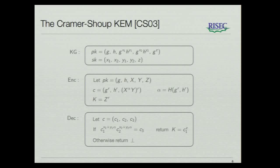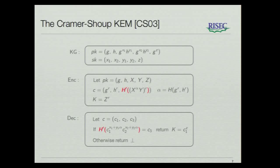Consider the Cramer-Shoup KEM, which has an encapsulation consisting of three group elements. In this KEM, the decapsulated key is only going to depend on the first group element, and the remaining group elements in the encapsulation are just used for checking validity. If we want to compress the ciphertext overhead of this scheme, we might look for a way to do a more efficient validity check. We might, for example, try to apply a hash function to a part of the encapsulation. If the output of this hash function is less than a group element, we will have reduced ciphertext overhead. The question is, will the scheme remain secure when we do this? If we assume that H prime is a target collision-resistant hash function, it is actually still possible to prove the security of this KEM based on the DDH problem. This is actually slightly surprising, but we would like something more efficient. This will reduce the overhead by approximately half a group element.